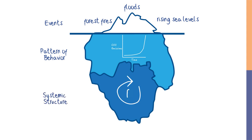When a pattern of behavior shows exponential growth, the underlying structure is a reinforcing feedback loop, so we know that reinforcing feedback sits at the bottom of this iceberg.